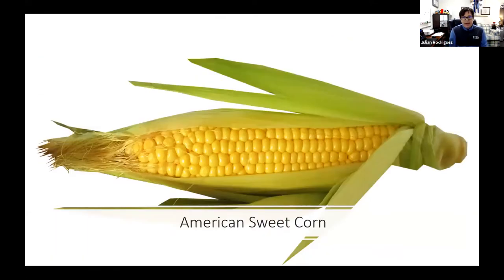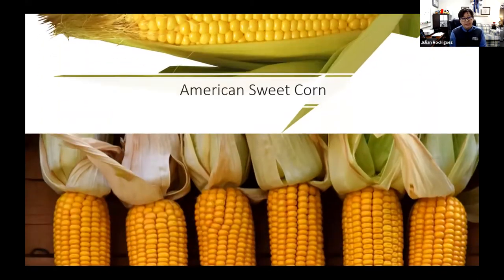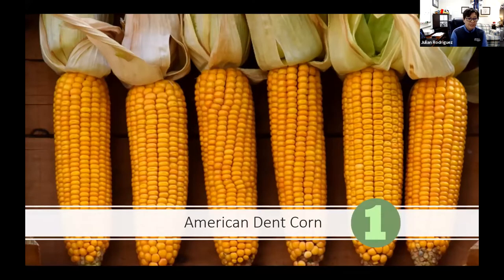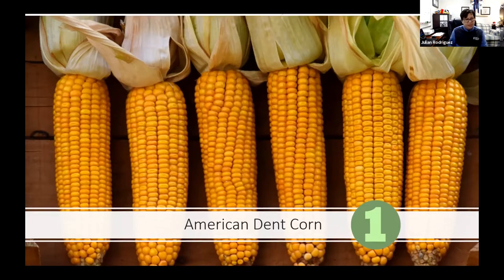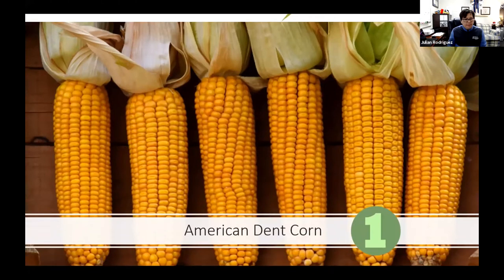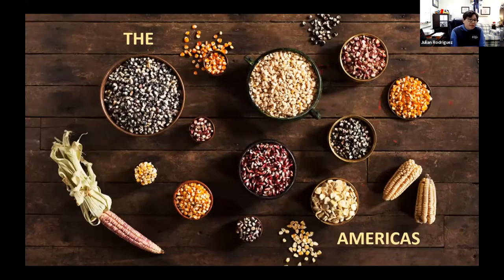So let's talk about corn. This is American sweet corn — the corn we all know and love here in the United States, what we find in supermarkets. But really, the number one corn the US produces is American dent corn, which makes up 99% of American production. With that corn, they make cattle feed and all kinds of things we consume. We simply only know about the sweet corn.